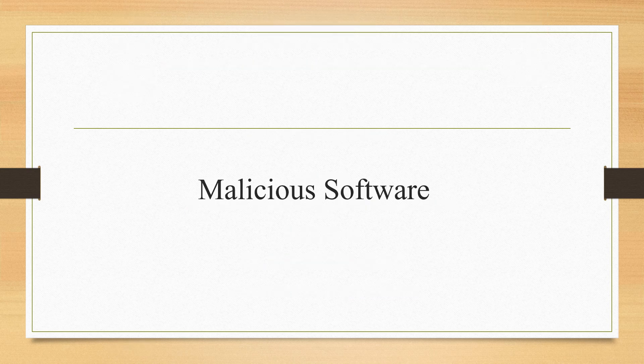Today we will discuss malicious software — what is meant by malicious software. Some of the threats related to programs that usually affect computer systems are called malicious software. Malicious software can be divided into two categories: those that need a host program, and those that are independent. The former are referred to as parasitic — essentially fragments of programs that cannot exist independently of some actual application, system program, or examples like viruses, logic bombs, and backdoors.